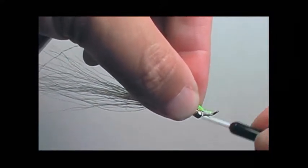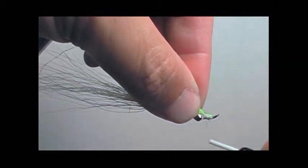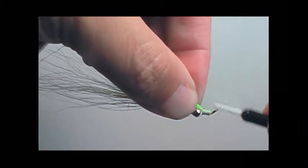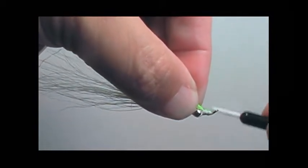You don't need to use chartreuse. You could use a brown bucktail to make sort of like a dace, but it seems like the chartreuse is very popular for smallmouth bass.